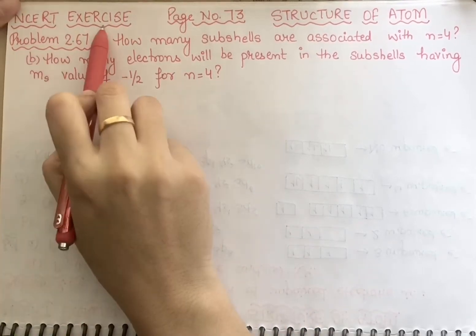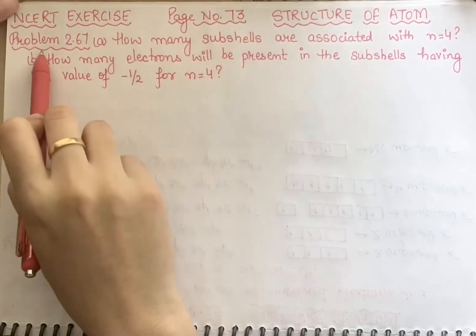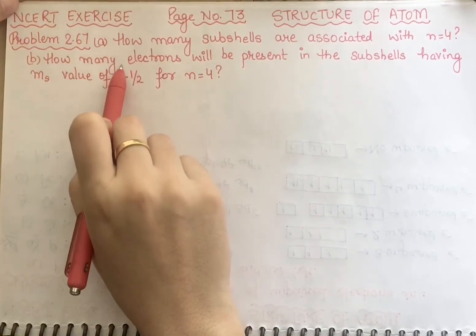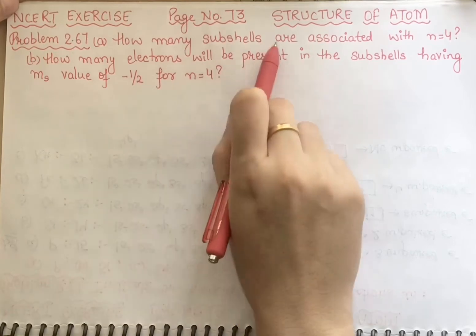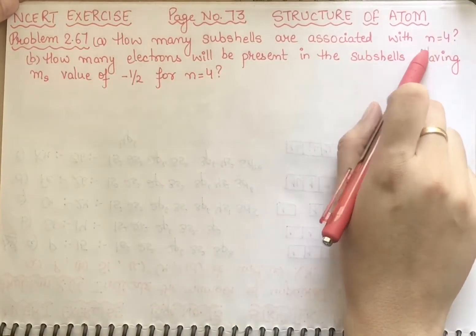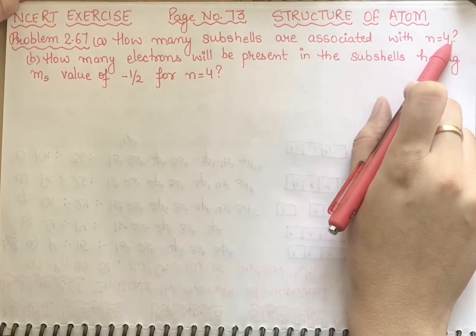Okay students, here we have NCRT exercise on page number 73, problem number 2.67. There are two parts given. What is it saying? How many subshells are associated with n equal to 4? You have an orbit given, n equal to 4.